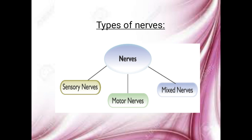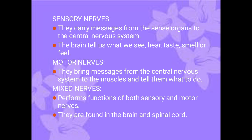How are the nerves divided? They get divided based on the type of messages they carry. There are three types: sensory nerves, motor nerves, and mixed nerves. First, sensory nerves — these nerves carry messages from the sense organs to the central nervous system. For example, if you are touching a hot plate, these sensory nerves will carry that message to the brain.